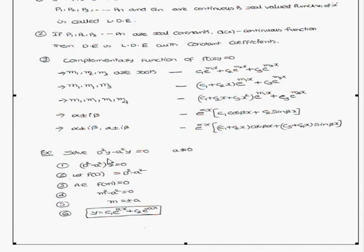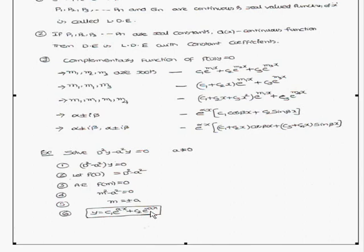Now we consider one example: (D² - a²)·y = 0. First step, f(D) = D² - a². The auxiliary equation is f(m) = 0, that is m² - a² = 0. Therefore m = ±a. Hence the complementary function is y = c1·e^(a·x) + c2·e^(-a·x).